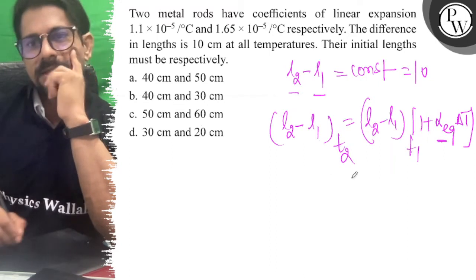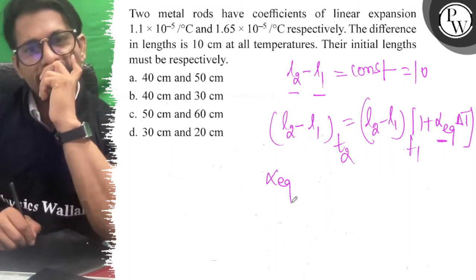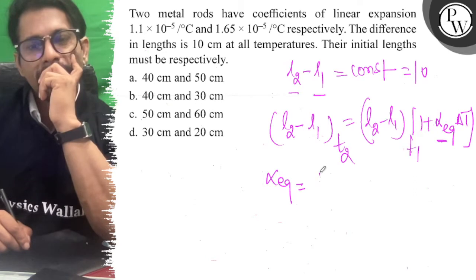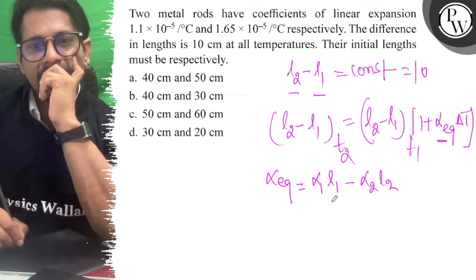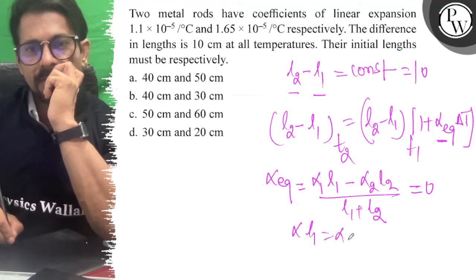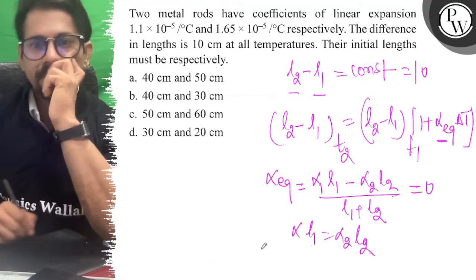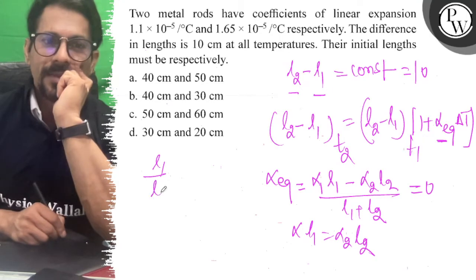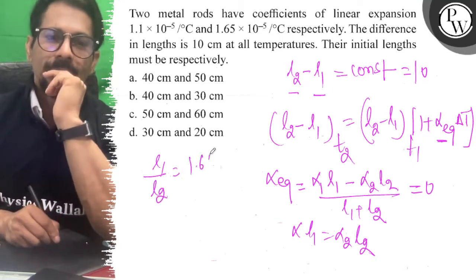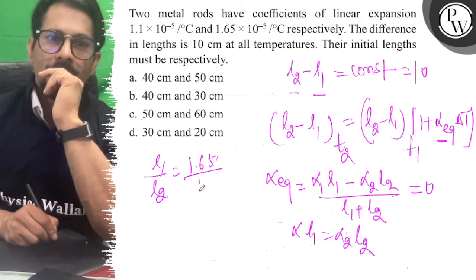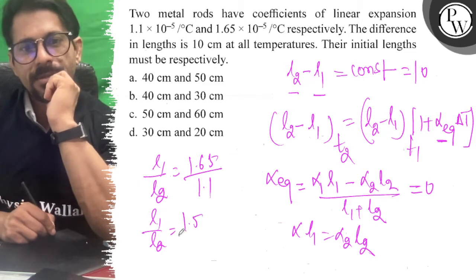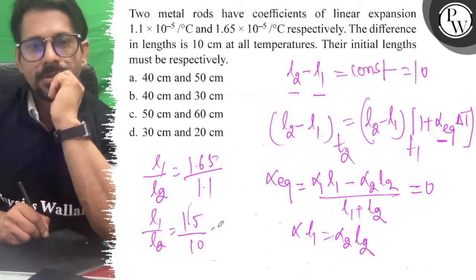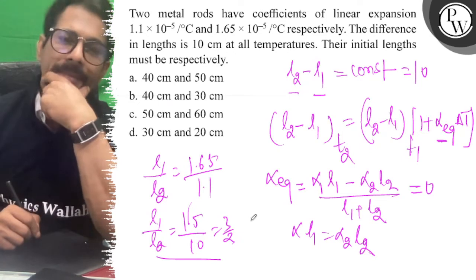The difference between L1 and L2 can be expressed in terms of the initial lengths. So L1 upon L2 equals the ratio of their coefficients.